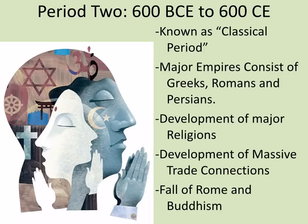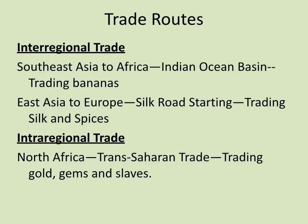Period two — 600 BCE to 600 CE — is known as the classical period. This is where we're going to have civilizations like Rome, Persia, and the Hellenistic empires. We're also going to see the development of major religions: Christianity, Buddhism, Confucianism, legalism, and the development of massive trade connections. We'll see the foundation of inter-regional trade with shipping connections between India and Africa, the Middle East and Africa, the Middle East and India, as well as the fall of Rome and the rise of Buddhism. Trade routes are a huge thing developing during period two. Inter-regional trade is when we are going from one region to another.